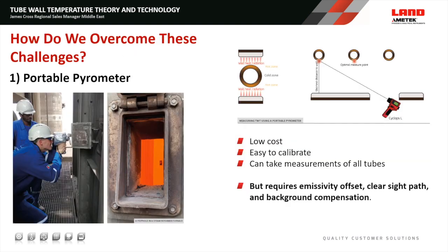So how do we overcome these challenges? The first is through portable pyrometry. This is a very common method used in the syngas industry — low cost, easy to calibrate in a black body furnace, and it can measure all tubes through peepholes. However, it does require an emissivity offset, a clear sight path, and background correction.